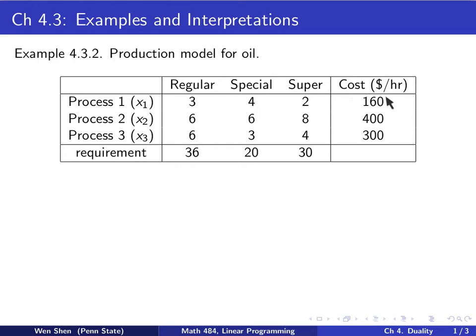In the last column is the cost to run the processor for an hour. Processor one costs $160 per hour, where hour is the unit of time. Processor number two can do more, but it's more expensive to run it. Processor three is in between. You also have a minimum requirement. You have to produce at least this amount of regular, this amount of special, and this amount of super three grades of oil. Take a look at the table and get yourself familiar with the setting.